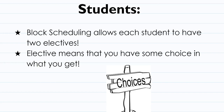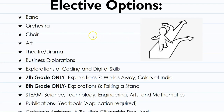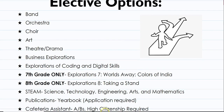Student scheduling allows each student to have two electives — elective means you have some choice in which you get. Elective options for next year include: band, orchestra, choir, art, theater and drama, business explorations, explorations of coding and digital skills, Exploration Seven: Worlds Away Colors of India (seventh graders only), Explorations Eight: Taking a Stand (eighth grade only), STEAM, publications (yearbook — application required), and cafeteria assistant. For cafeteria assistant, you must have A's and B's and high citizenship is required.